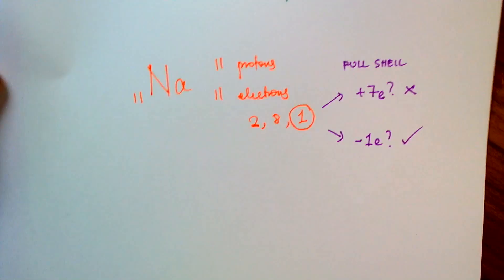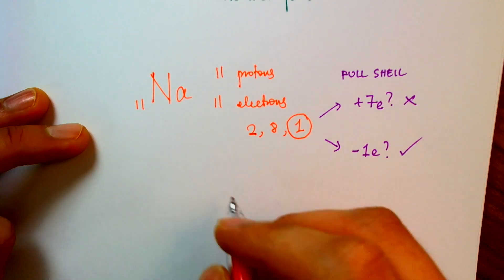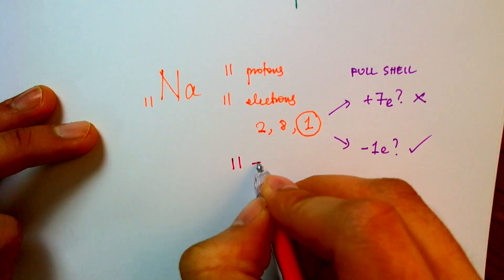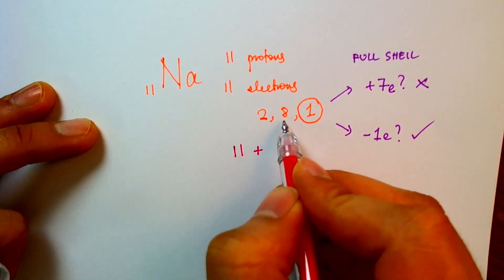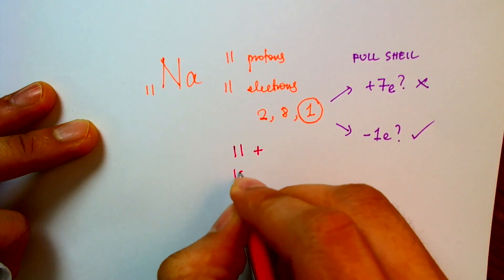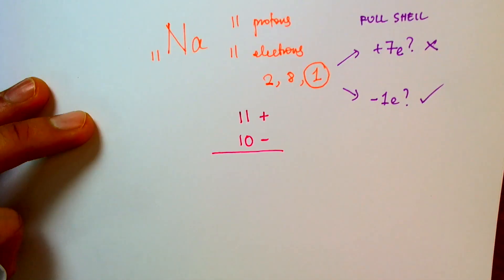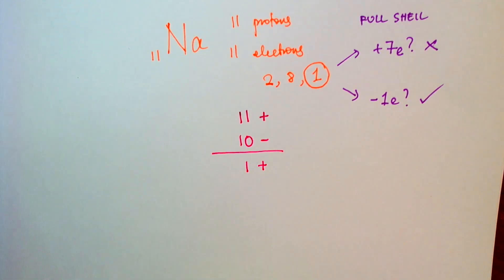Now, what happens when sodium loses one electron? Well, it has 11 protons, so protons have plus charge. And after losing an electron, it's got 2 plus 8, 10 electrons, and electrons have a minus charge. So what we see is that sodium ends up with a net positive charge of 1.